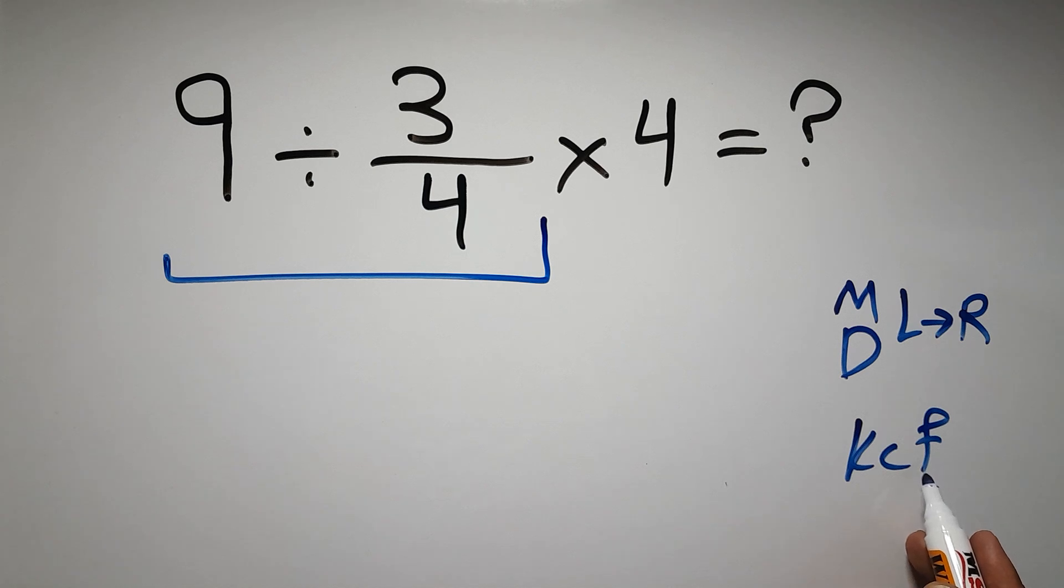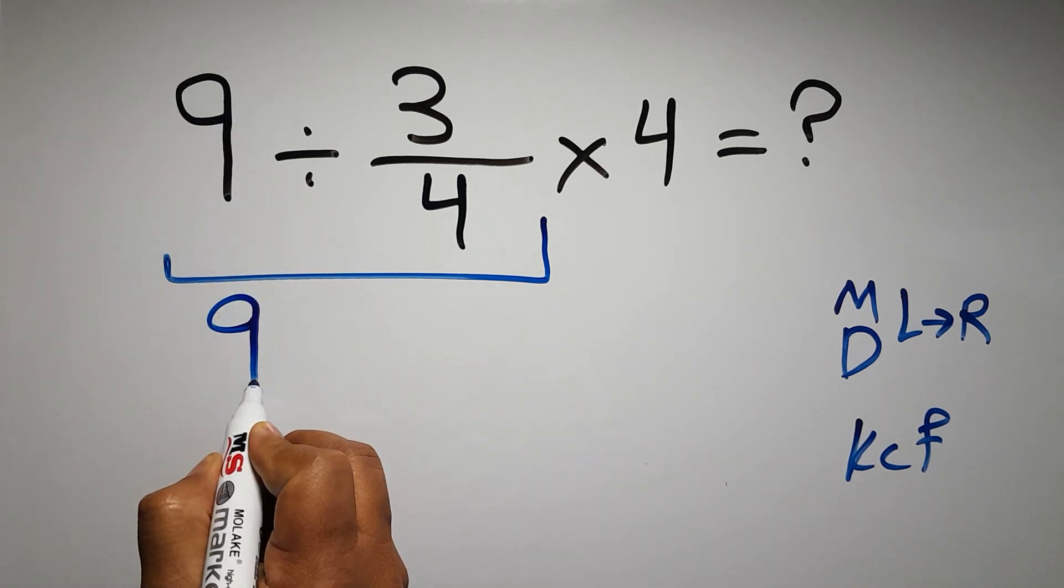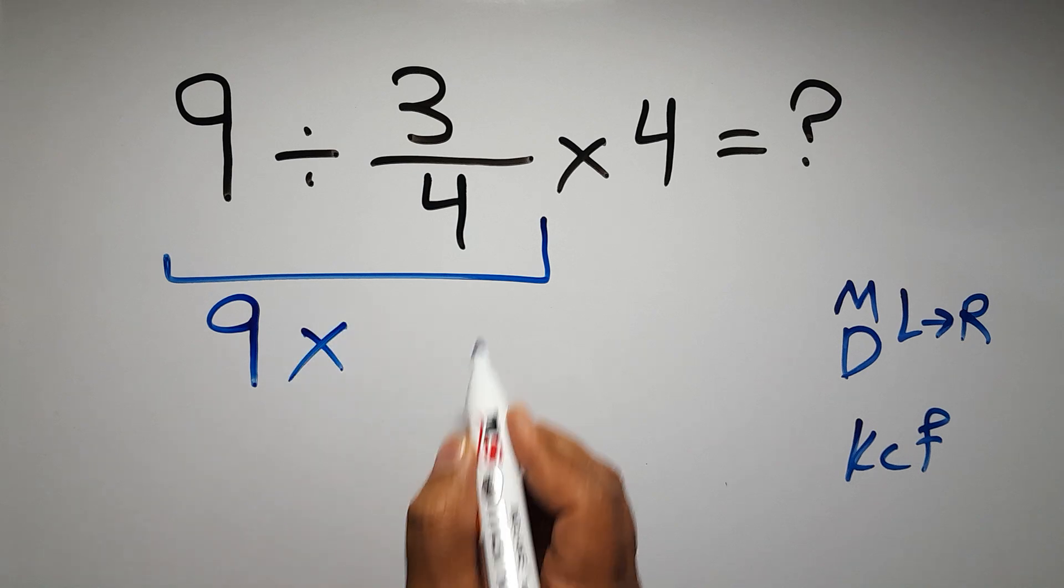We can write: keep the first fraction, change division to multiplication, and flip the second fraction, and times 4.